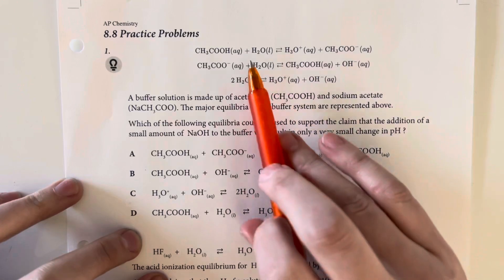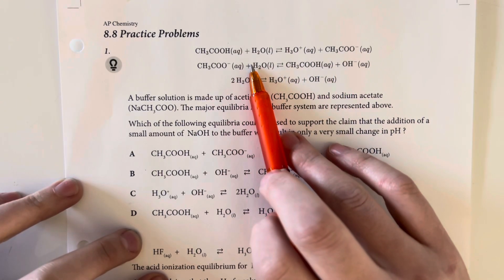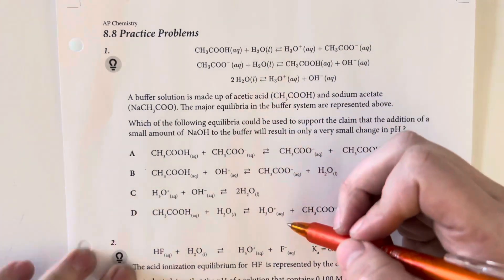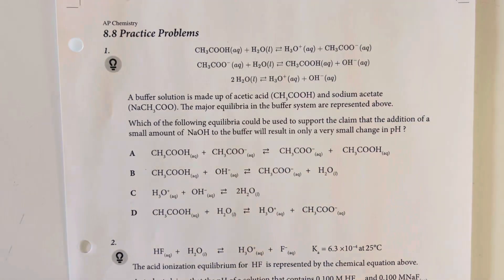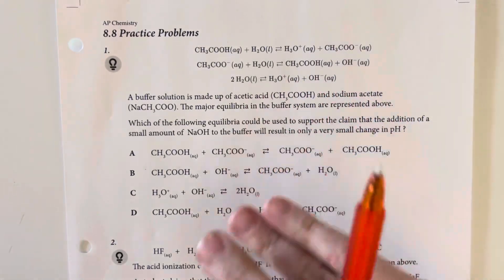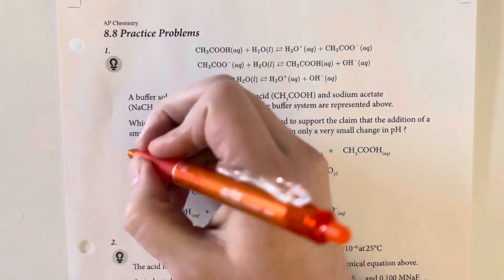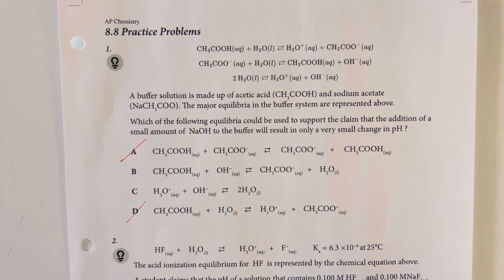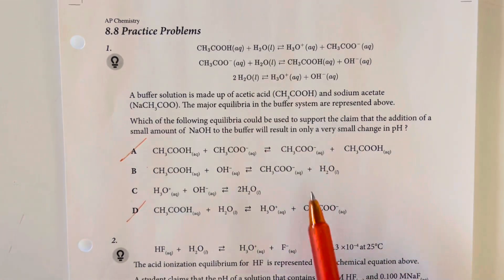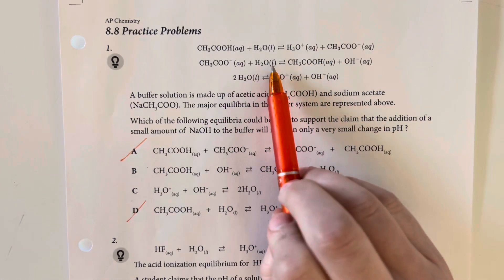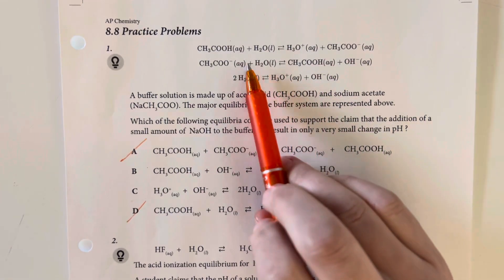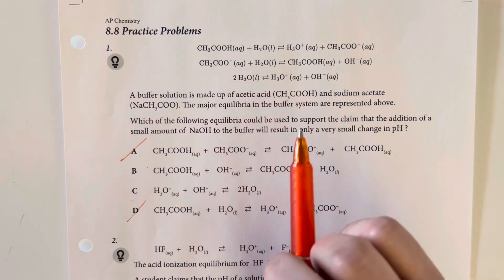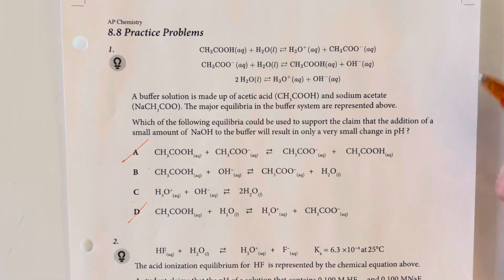If we were to add hydroxide to the left-hand side of our equation, which we would need to see on our equation here — where we have the reverse of a reaction, or where we have hydroxide being added, which would only be present in either B or C — then we would precipitate out water. It matches most closely where we add hydroxide to the acetic acid and it precipitates out water and gives us an acetate ion in solution.